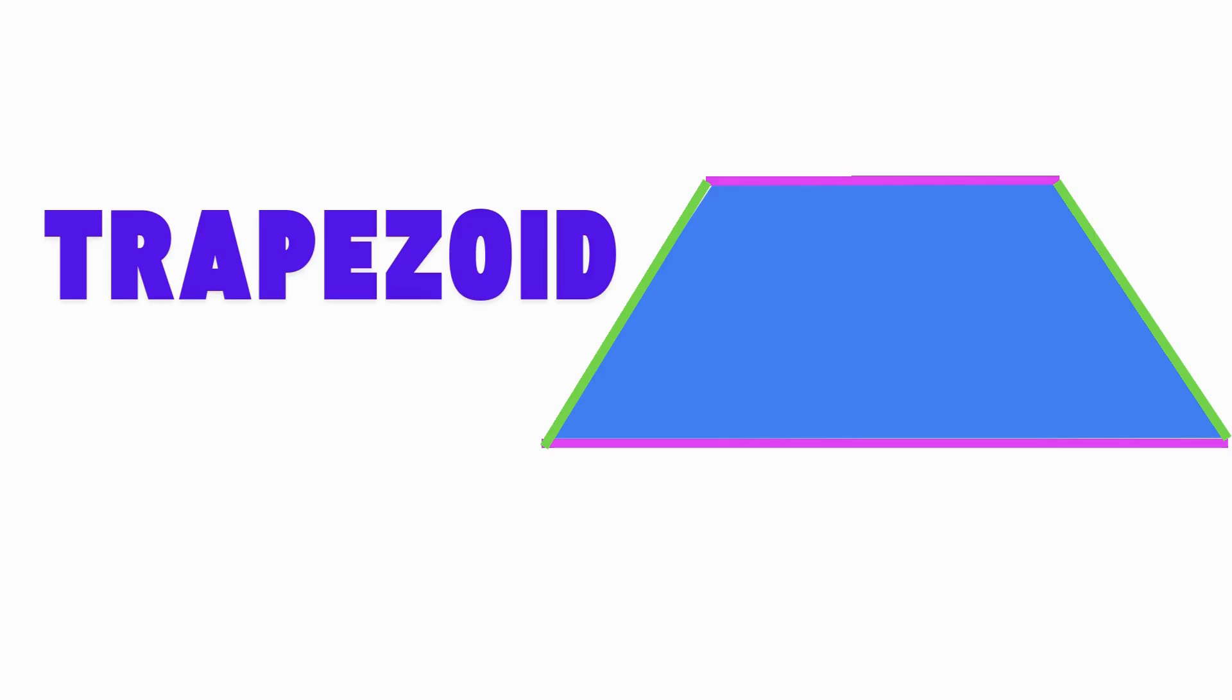A trapezoid has only one pair of sides that are parallel. Look at this trapezoid. See the pink lines? They are parallel. The green lines are not. A trapezoid kind of looks like a triangle with the top chopped off. Say, trapezoid. Draw a trapezoid in the air with your finger.